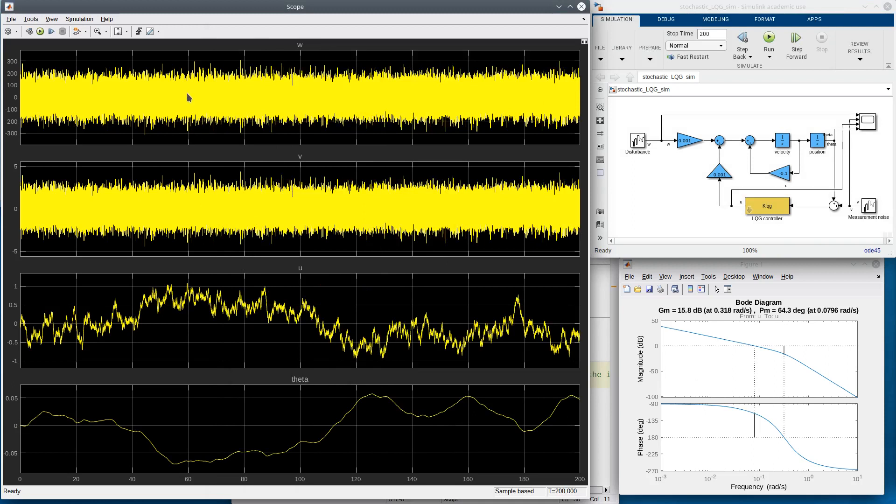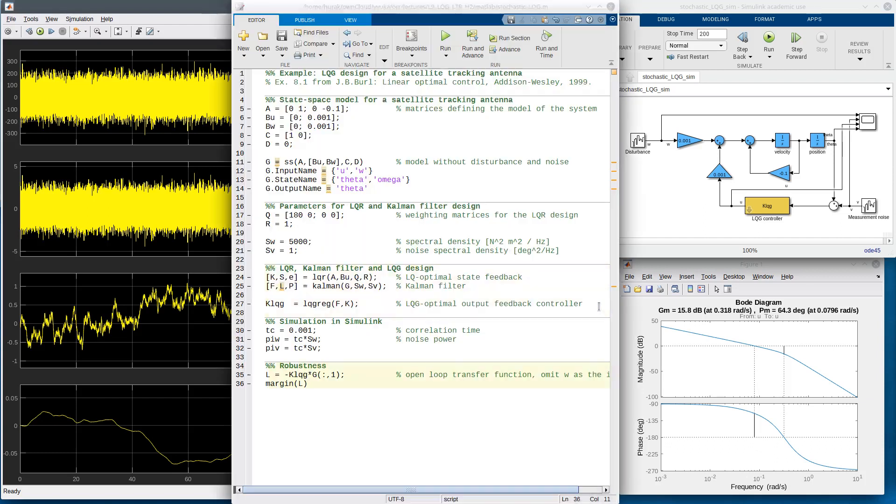The first two signals are the disturbance and the measurement noise. These are white noises, of course approximate white noises in this implementation. Then I have the control signal here and one of the two state variables, theta, because that's the only one I should be interested in. Theta goes roughly between minus and plus 0.05. Say we are not quite happy about it. We want to make this regulation error smaller. What shall we do about it? We can penalize the corresponding state variable by increasing the corresponding element in the Q matrix. Say we'll increase it 100 times. Remember, this is quadratic.